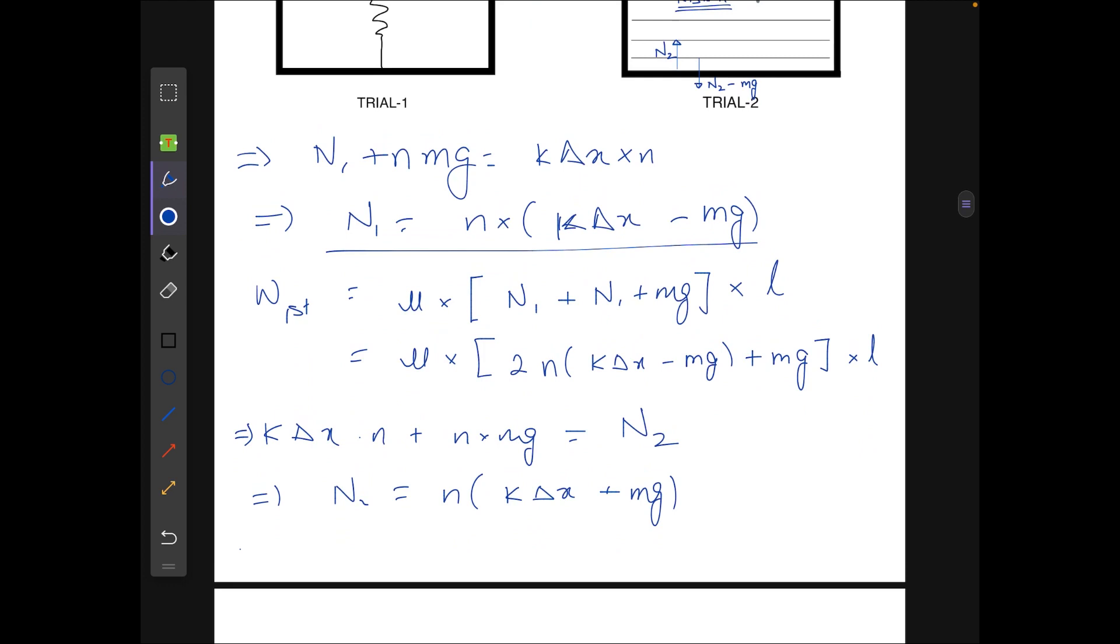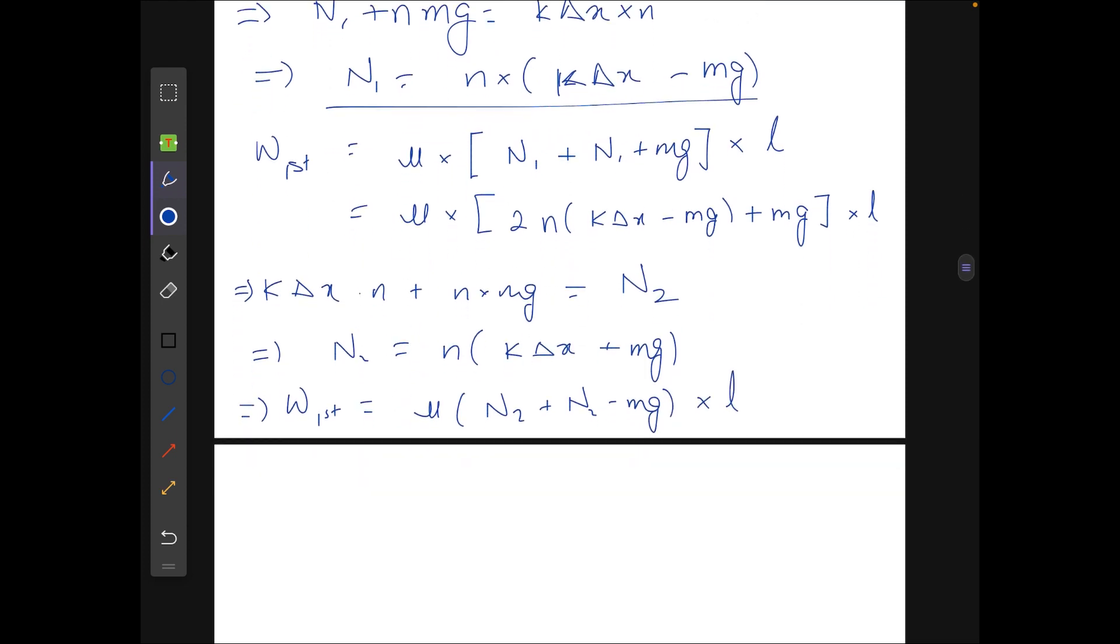And after that similarly while removing the first plate in trial 2, the work done will be equal to mu times (n2 plus n2 minus mg) into l. So here again substituting from above we get that this is equal to 2n2 minus mg and that will be 2 times n times (k delta x plus mg) minus mg into l.